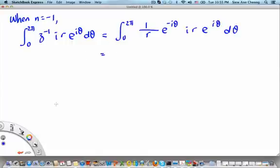And therefore, what we get is that the r will cancel. But not just that. The e to the i theta will also cancel with the e to the minus i theta.